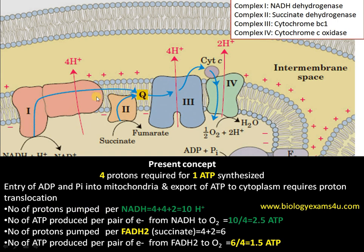Number of protons pumped per NADH is 4 + 4 + 2 = 10. Number of ATP produced equals 10 ÷ 4 = 2.5 ATP. In the case of FADH2, number of protons pumped is 4 + 2 = 6, and number of ATP synthesized per pair of electrons from FADH2 to oxygen is 6 ÷ 4 = 1.5 ATP. This is the new concept.